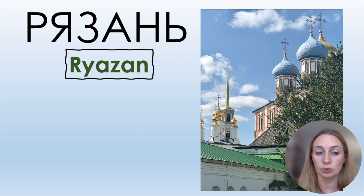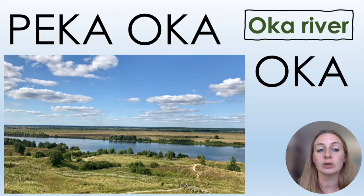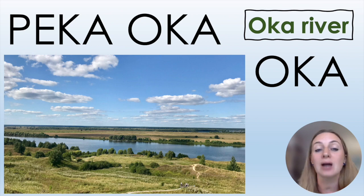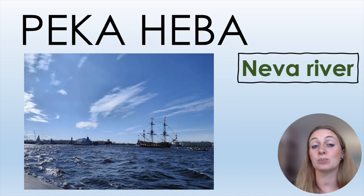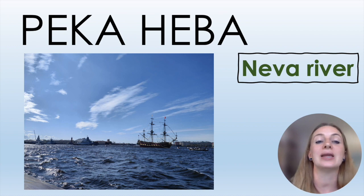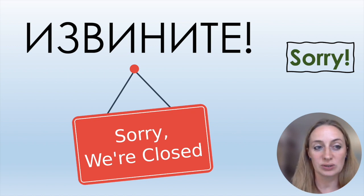In the city Рязань, which is not far from Moscow, you can see a river called Ока — we pronounce it like А, so: Ока. Река Ока. Another famous river is in St. Petersburg: Нева. Река Нева.